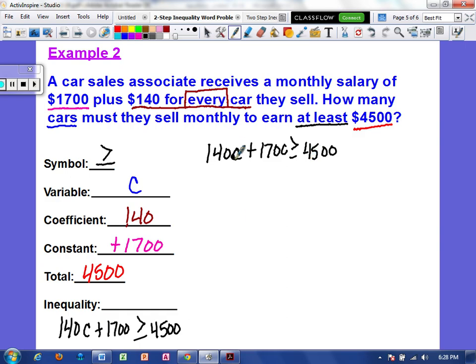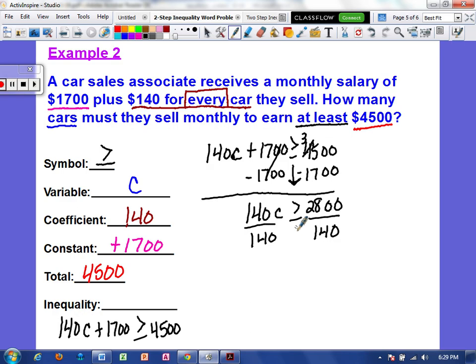Okay. So I'm going to go ahead and separate the left and right side and carry down the symbol. The inverse of adding $1,700 would be to subtract it. So we'd be left with 140C on the left. Over here when we subtract we get $2,800. So now the inverse of multiplying by 140 would be to divide by 140. I'm dividing by a positive so my inequality symbol stays the same.